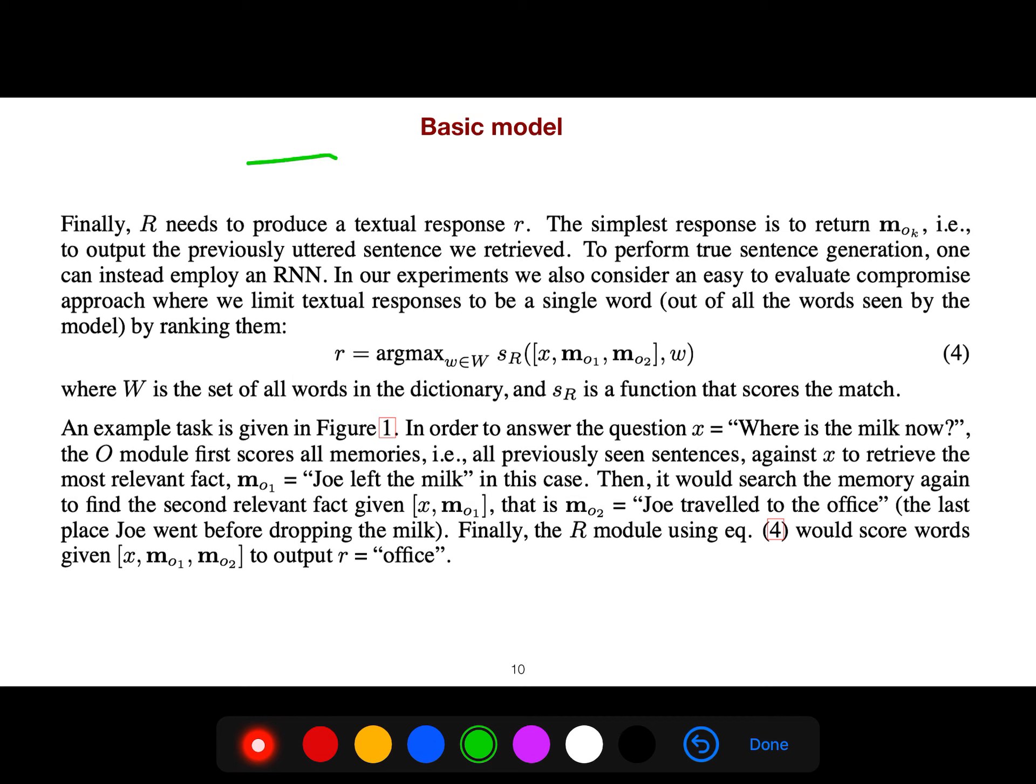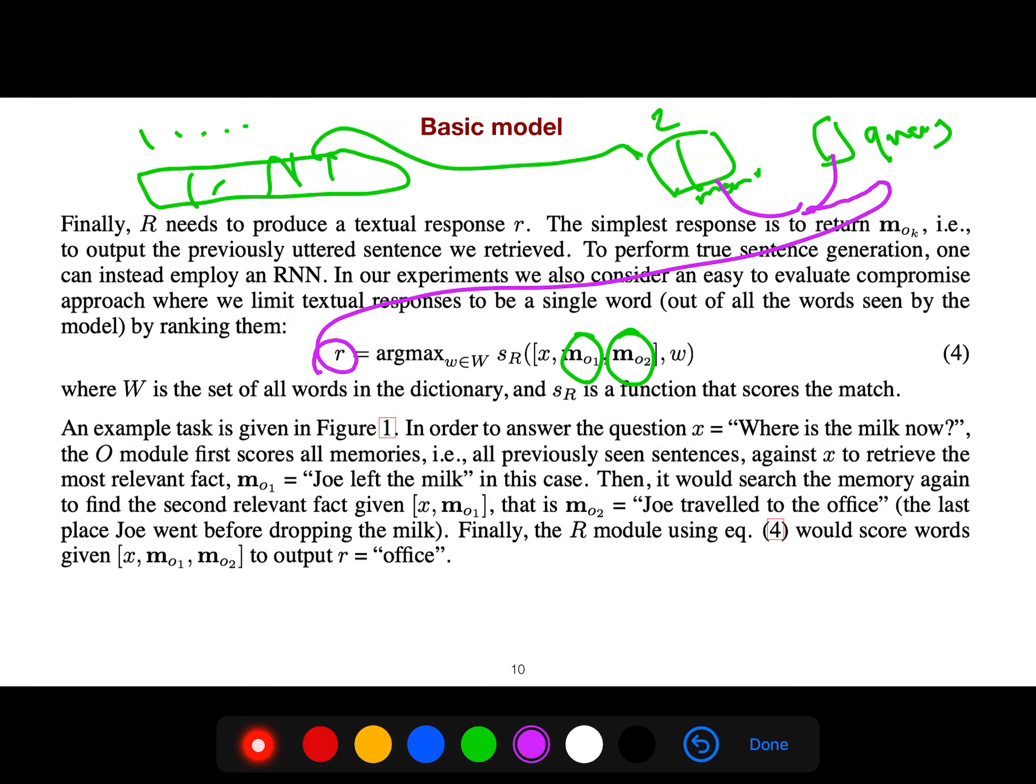As I said, from for example 1000 memories we just pick one and two, we just pick two memories and we combine it with our query. So these are memories we have selected out of 1000 memories and we combine these memories and the queries to form this answer response. The answer is milk, for example, it's just one word. So one word over many words in your vocabulary, what is the probability of each of them? And we get for example w equals milk.